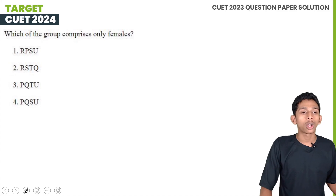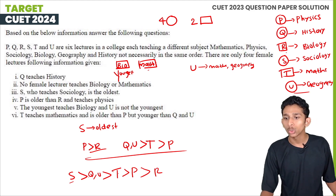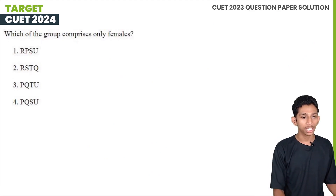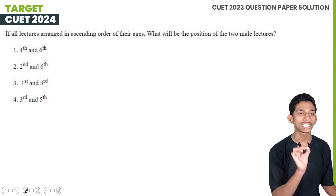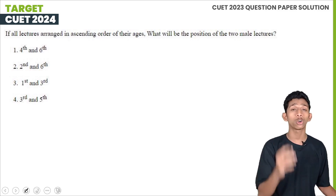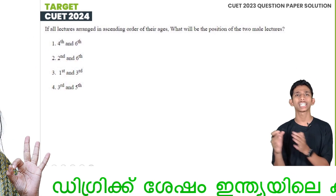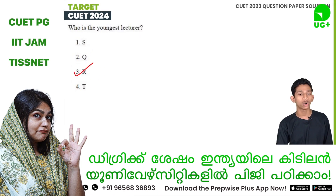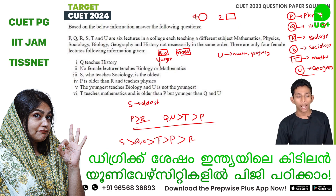Which group comprises only female lecturers? The two male lecturers teach Biology and Mathematics — that is R and T. So the females are P, Q, S, U. The group Q, S, U, P comprises only females.